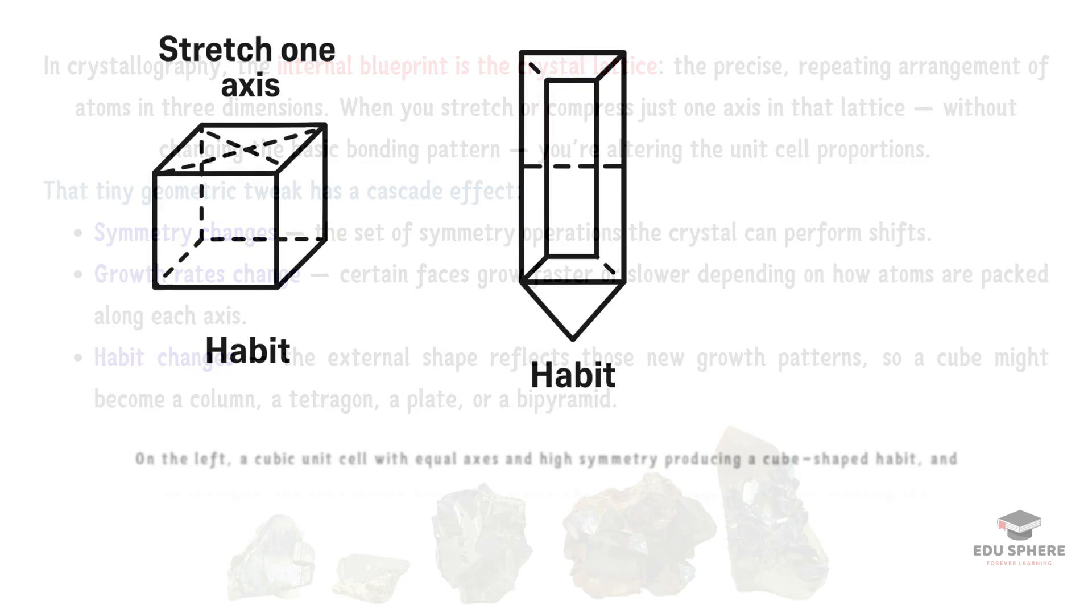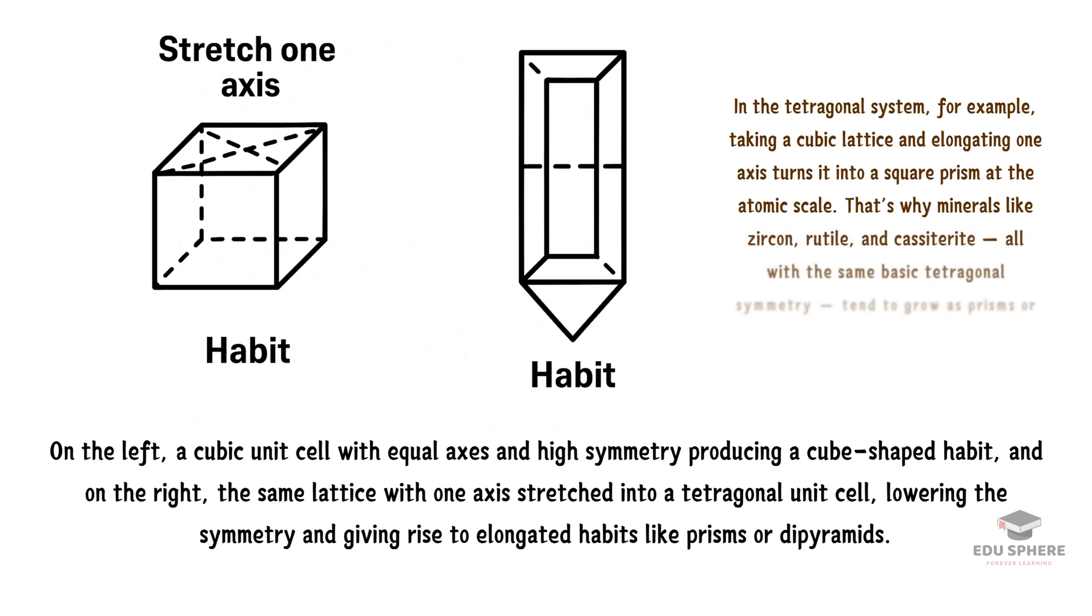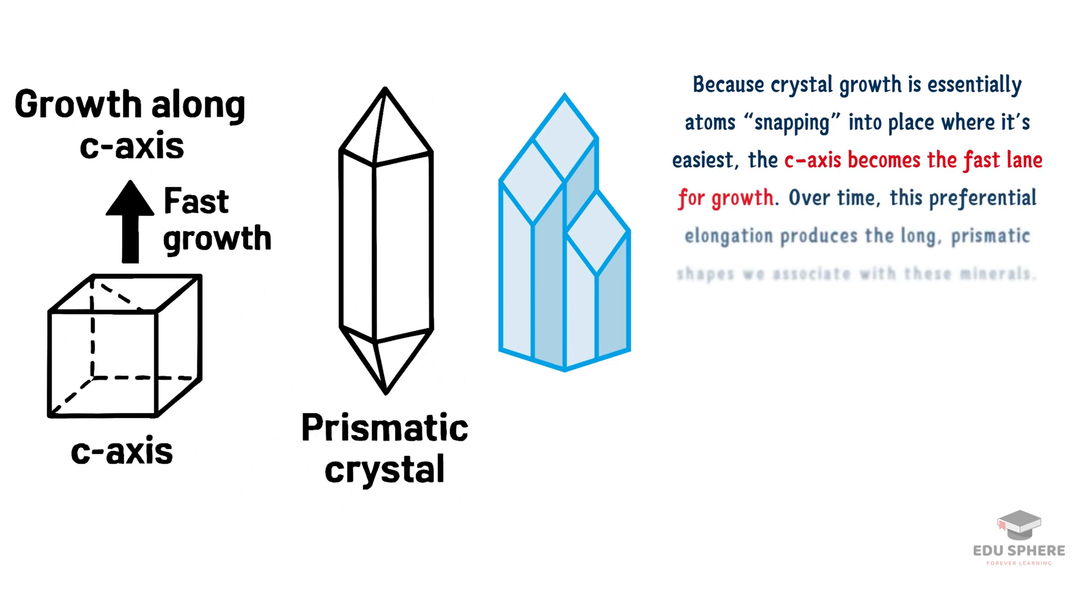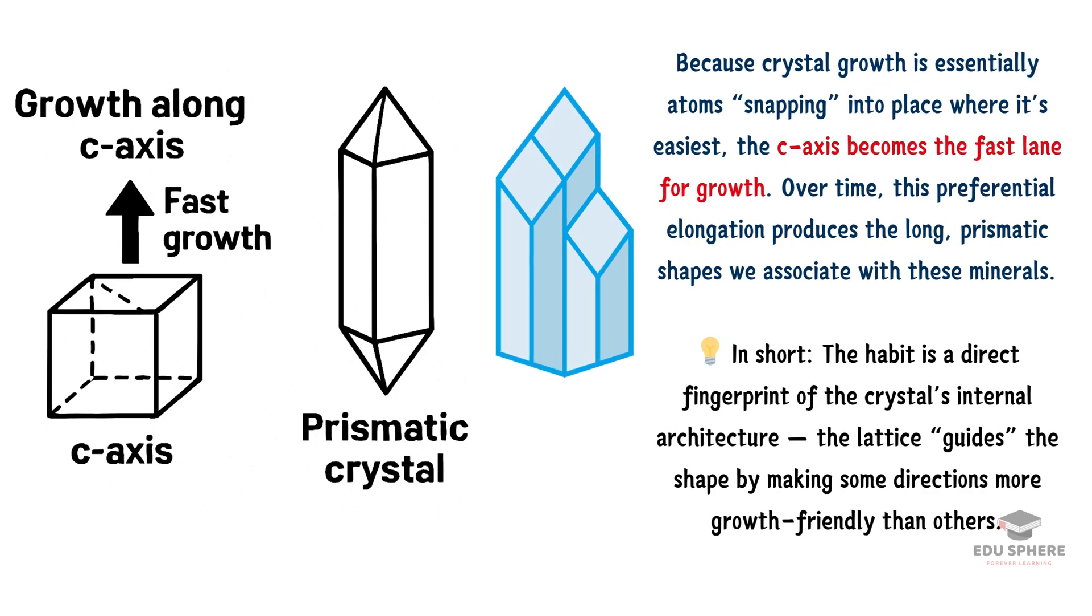In the cubic system, where all axes are equal, crystals tend to grow equally in all directions, forming blocky shapes like cubes. But in the tetragonal system, that unique c-axis creates a preferred direction of growth. The crystal finds it easier to add new atoms along this special direction, which is why tetragonal minerals like zircon and rutile so often form long, prismatic crystals.